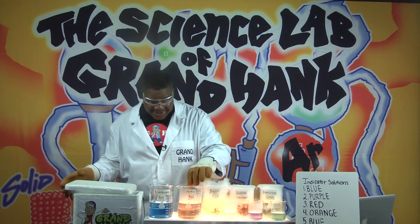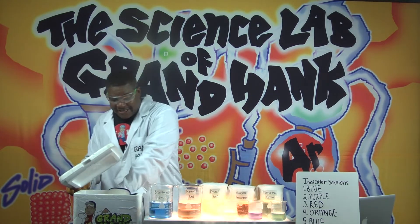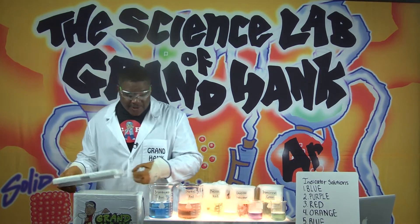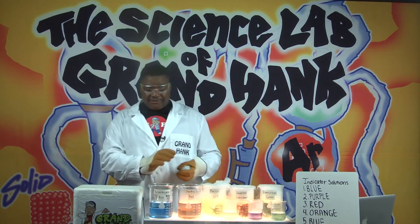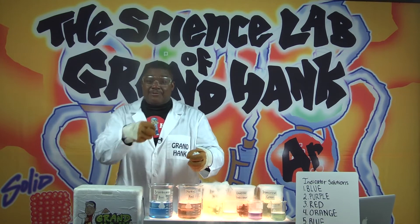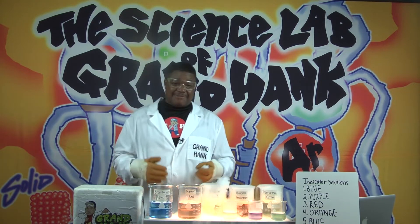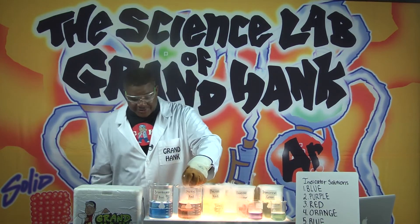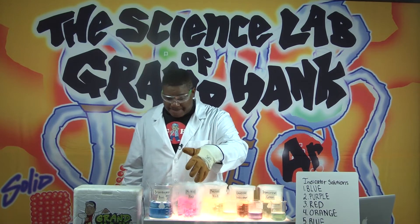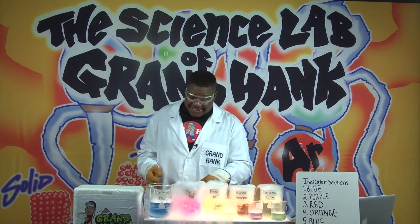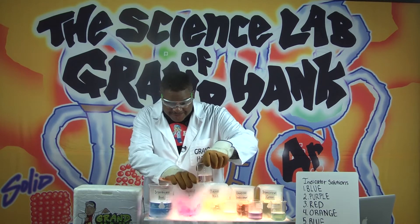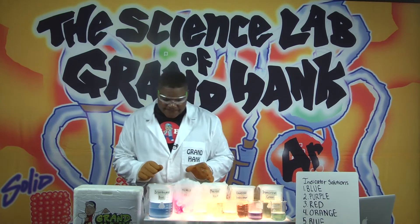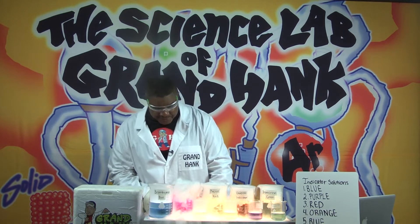The next one is methyl red. So let's load up — write down on a piece of paper what color you think it's going to change when Grand Hank drops this carbon dioxide in. Is it going to be green? Yellow? Red? Violet blue? Let's drop it in. It went from an orange color and now it's looking at a nice rosy red color — a beautiful thing to see. Now let's try something interesting since we're dealing with carbon dioxide: let's ignite this and bring it close to the carbon dioxide to see what happens.